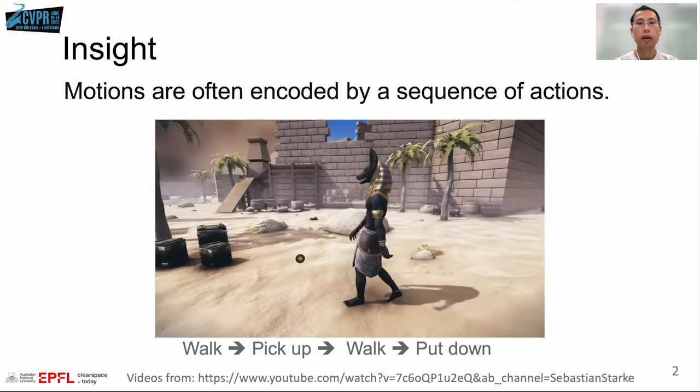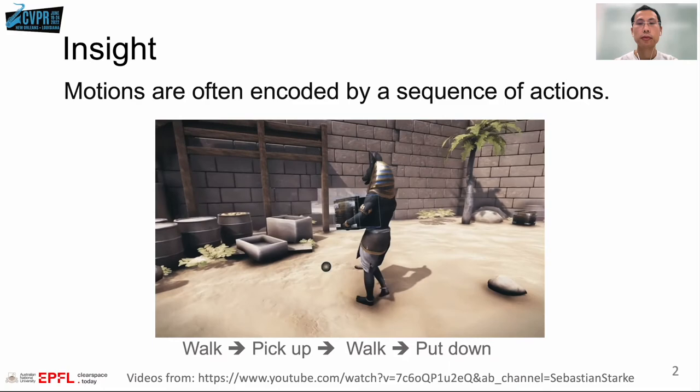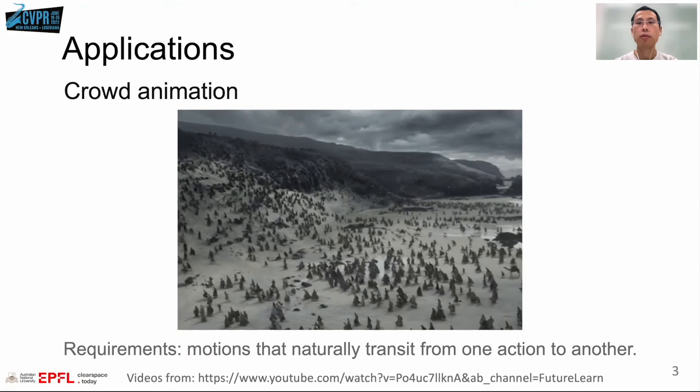Our insight is that human motions are always encoded by a sequence of actions. Enabling computers to produce motions that follow certain action sequences is important for applications like crowd animation.